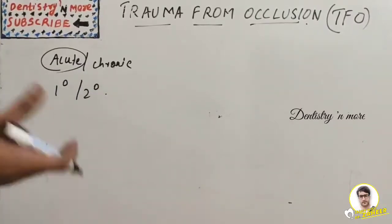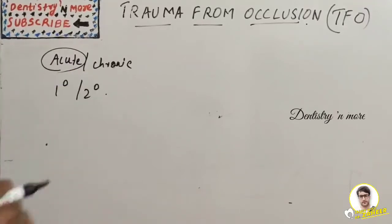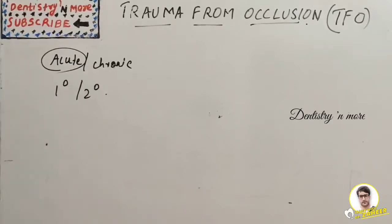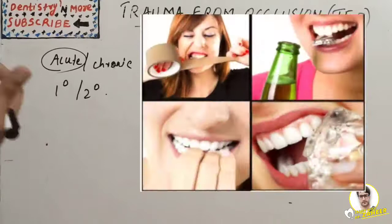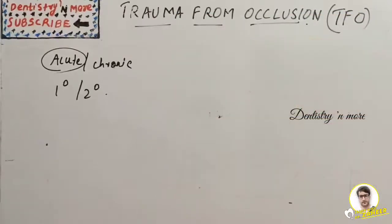Chronic TFO is more common and significant, occurring slowly over a period of time through gradual changes by tooth wearing, drifting, movement, and extrusion, or through parafunctional habits. Malocclusion is not necessarily trauma from occlusion.